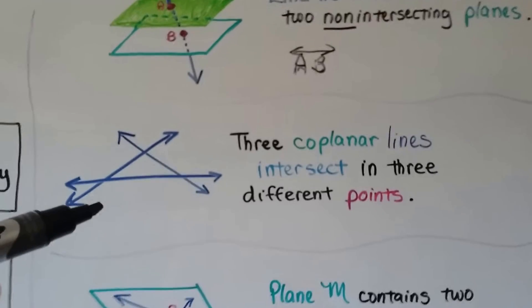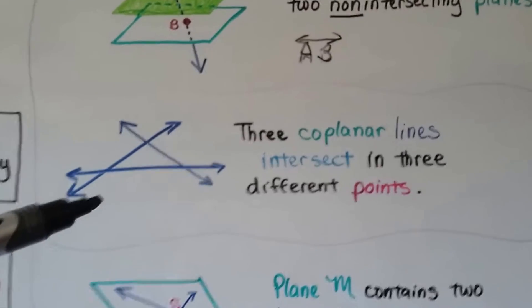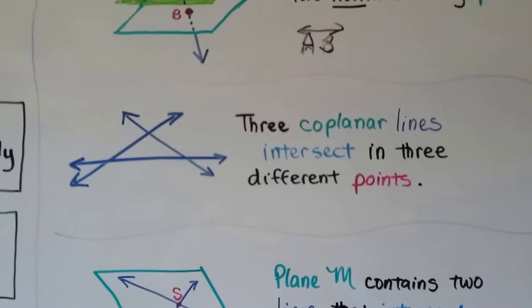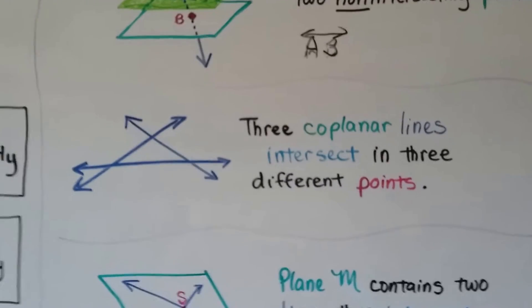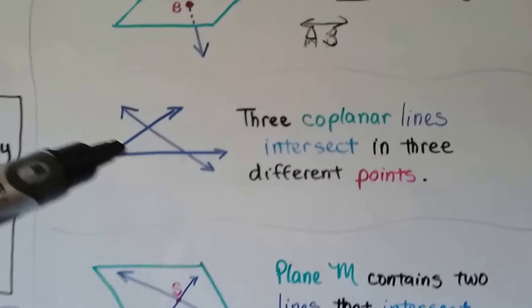Here we have three coplanar lines intersect in three different points. So these three lines are all in the same plane, they're coplanar, and they're intersecting in three different points. Here, here, and here.